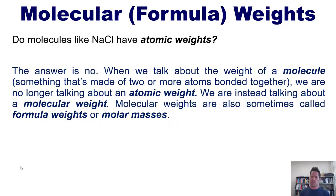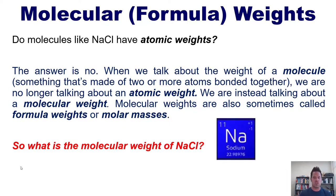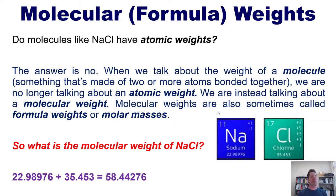Molecular weights are also sometimes called formula weights or molar masses. So what is the molecular weight of sodium chloride? Sodium's atomic weight is 22.98976, whereas chlorine's is 35.453. Each individual molecule of sodium chloride has just one sodium and one chlorine. So to determine the molecular weight of NaCl, you add one of this number together with one of this number: 22.98976 plus 35.453.